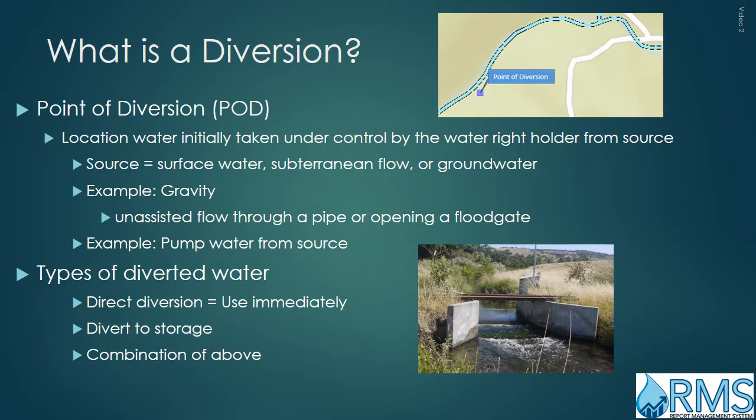What is a diversion? A point of diversion, or POD, is the location where water is initially taken under control from a source by a water right holder. Sources can be surface water, subterranean flow, or groundwater. Examples include gravity-fed diversions where gravity causes water to flow through a pipe or a floodgate, or pumping water from a source.